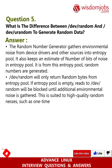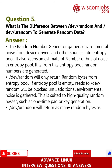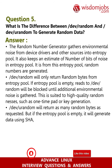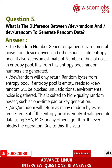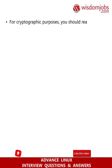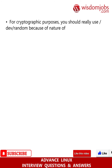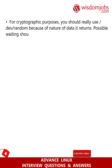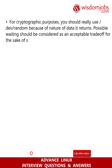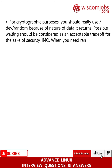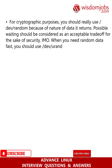This makes /dev/random suited to high-quality randomness such as one-time pad or key generation. /dev/urandom will return as many random bytes as requested. But if the entropy pool is empty, it will generate data using SHA, MD5, or any other algorithm. It never blocks the operation. Due to this, the values are vulnerable to theoretical cryptographic attack, though no known methods exist. For cryptographic purposes, you should really use /dev/random because of the nature of the data it returns. Possible waiting should be considered an acceptable trade-off for the sake of security. When you need random data fast, you should use /dev/urandom.